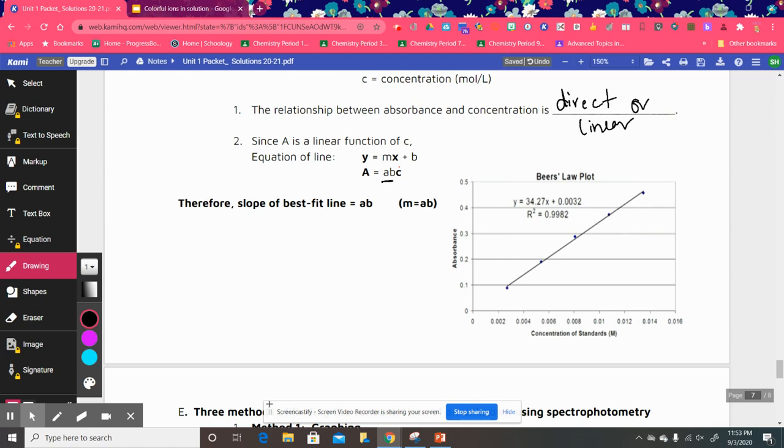So we have absorbance is directly proportional to that concentration where a times b is the slope of the best fit line.